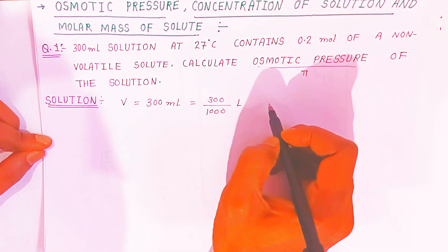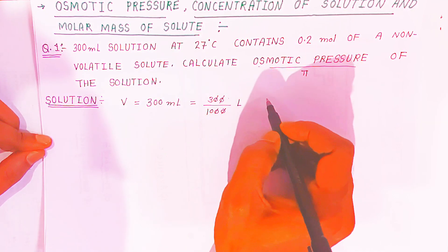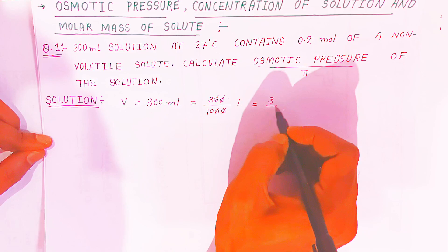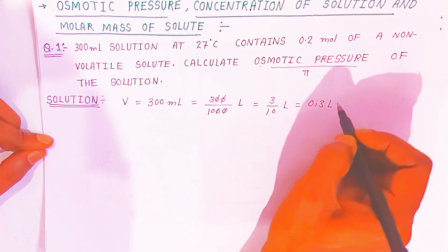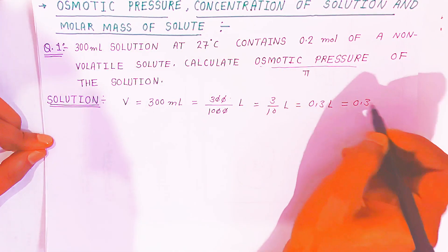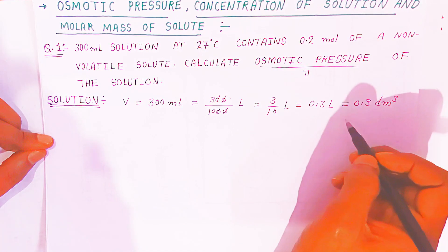Liters is also called dm³. So this zero will cancel with this zero, and 3 upon 10 liters, which is 0.3 liters, which you can also say 0.3 dm³. So this is the volume now expressed in liters.